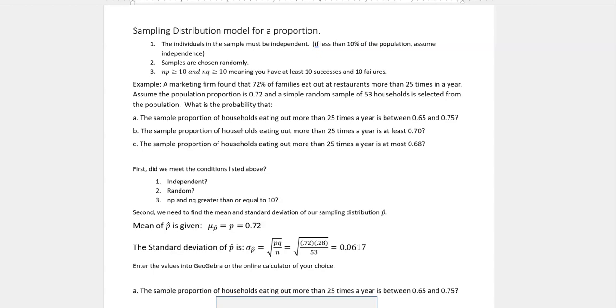And then is n times p and n times q greater than or equal to 10? If you take 0.72 times 53, that gives you your np. Find q by taking 1 minus 0.72, which is 0.28, multiply that times 53. You also get more than 10, so we've met those conditions.